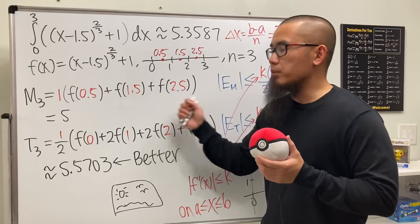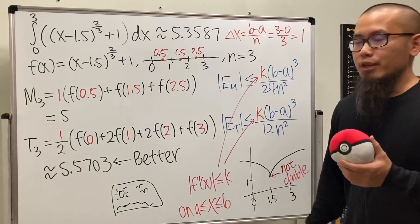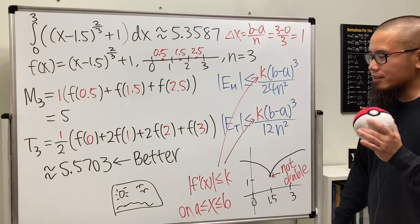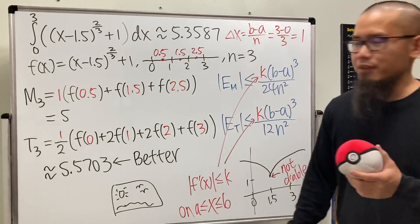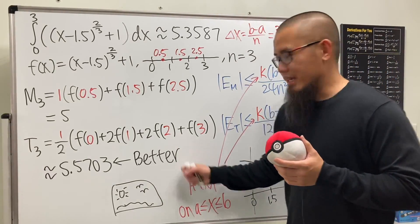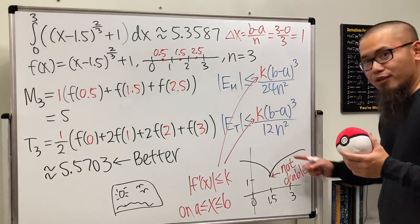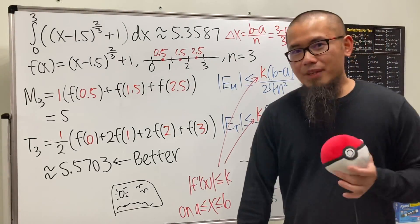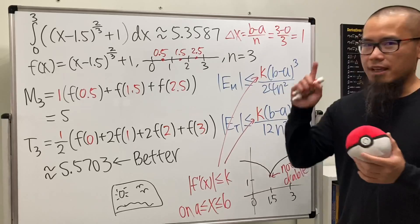That's why we had a chance that the trapezoidal rule could beat the midpoint rule, and it actually did. Oh my god, I was so happy that I finally found an example for that, and an example that actually has a curve.